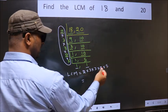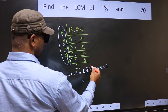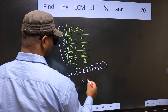So let us multiply these numbers. 2 into 3 is 6, into 3 is 18, into 2 is 36, into 5 is 180. So 180 is our LCM.